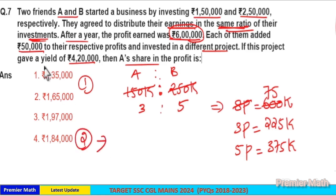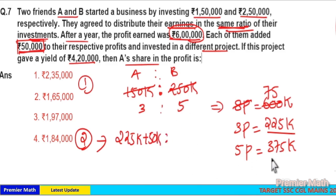Now in the second project, A and B added ₹50,000 to each of their profit. A's profit was ₹225,000, so he added ₹50,000 to it. So ₹225,000 plus ₹50,000. And B added ₹50,000 to ₹375,000.